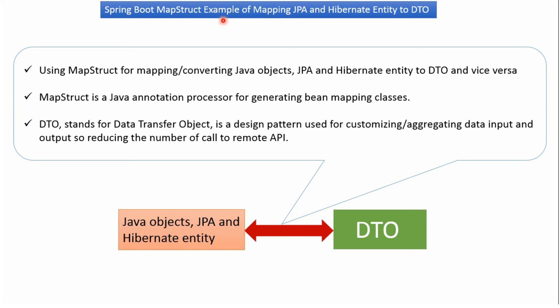In this video tutorial I will explain a Spring Boot MapStruct example of mapping JPA and Hibernate Entity to DTO. Using MapStruct, we can convert Java object to DTO, JPA to DTO, and Hibernate Entity to DTO.